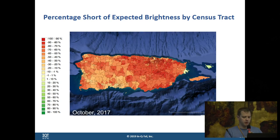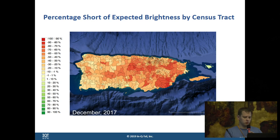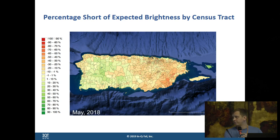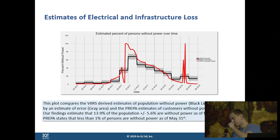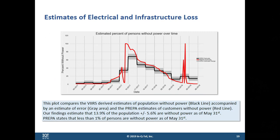These slides were built in in case the GIF didn't work. Again, December, February, May — you can really see the southeast is still quite a bit darker than we would expect it to be. With this information, we can compare against the official estimates from the Puerto Rico Electric Power Authority to really track how closely our remote sensing estimates are related to the official estimates.